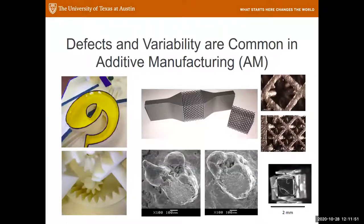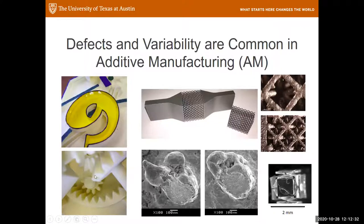Those familiar with additive manufacturing know that defects and variability are quite common — more so than in conventional processes like molding, casting, and machining, partly because we understand those processes better, and they also have fewer variables to adjust. In additive manufacturing, we often find parts are too small or too large, they don't mate properly, or moving parts may become fused. We're always pushing the boundaries — making things as thin or small as possible — which leads to more defects.